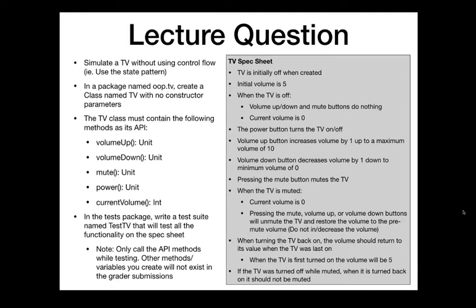Any questions on the question itself? If the TV was on and you turn it off and back on again, the volume should be whatever the volume was when you turned it off. This is only five the very first time you turn it on. Say you decrease it to three, turn it off, it'll be zero; turn it back on, it goes back to three. It resumes whatever volume it was at before being turned off last time.